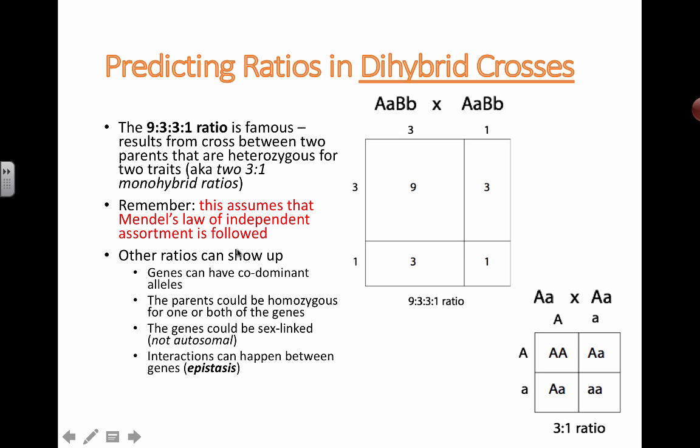So after some new evidence came out, we've discovered some other ways that traits get inherited. For example, genes can have co-dominant alleles, for example in blood types where i^A and i^B can be expressed together to form the AB blood type.